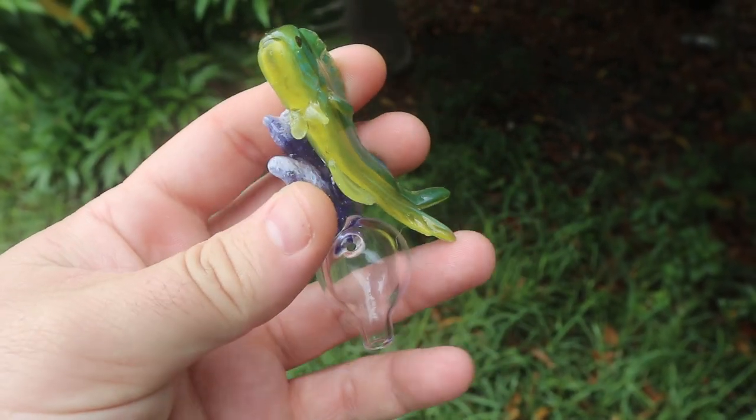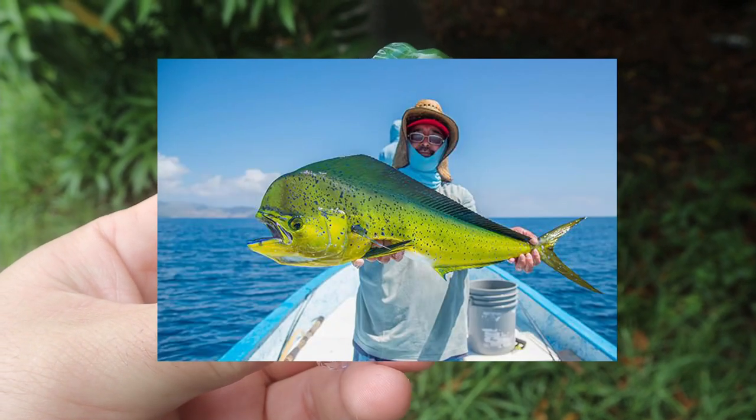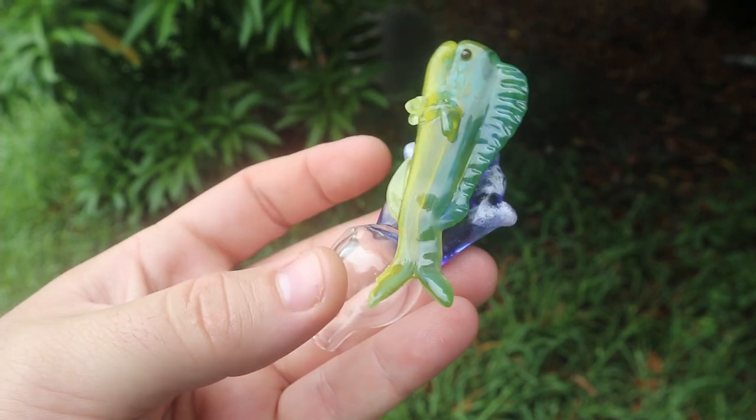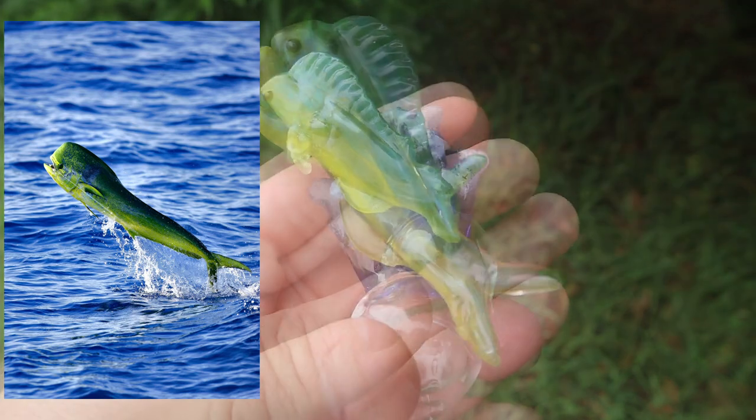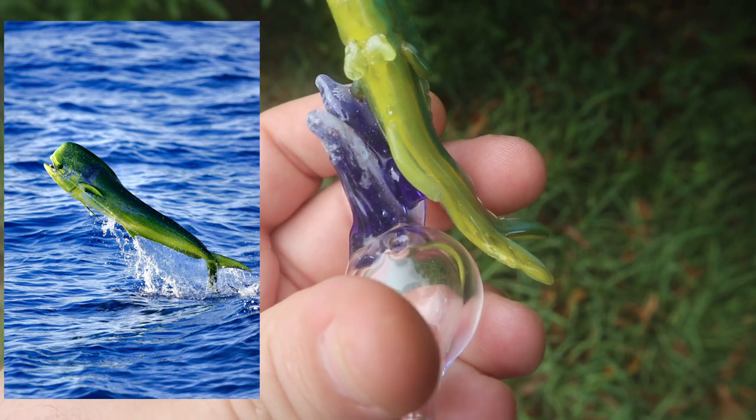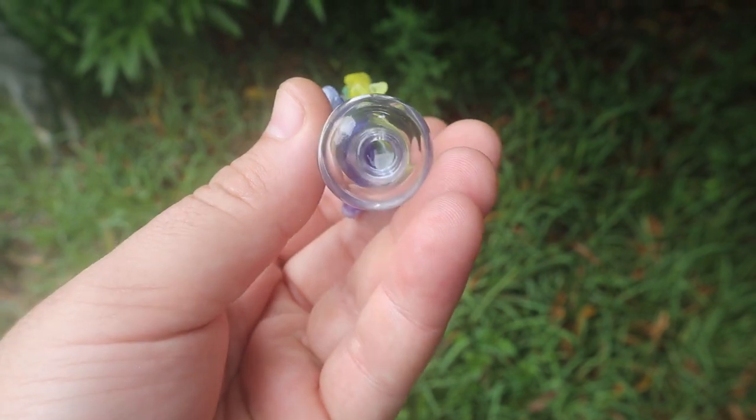So today we're going to be making a Mahi Mahi bubble cap. A Mahi Mahi is a fish that looks just like this. Hopefully this guy doesn't sue me for using his picture. That's the fish, and what I'm trying to represent is it jumping out the water like that. You see those white strips of water coming out? That's what I'm trying to represent with the blue and the white caps on the glass.